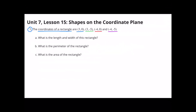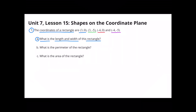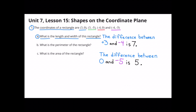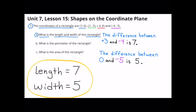The coordinates of a rectangle are 3 and 0, 3 and negative 5, negative 4 and 0, and negative 4 and negative 5. What is the length and width of this rectangle? The difference between positive 3 and negative 4 is 7. The difference between 0 and negative 5 is 5. So the length and width of the rectangle would be 7 and 5.